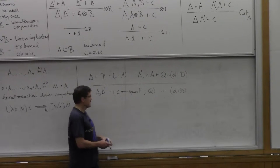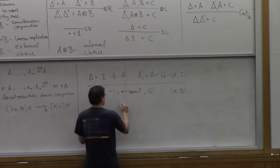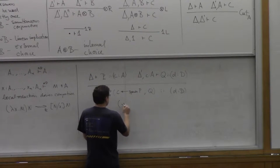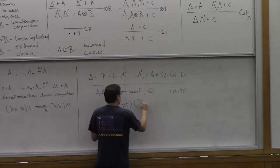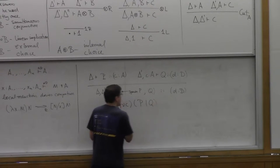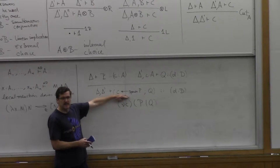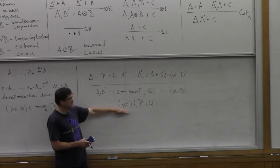So in the pi calculus, if you know about the pi calculus, you write this as there's a new channel C which is private, and you run P and Q in parallel. This is a little more semantic. This is more syntactic in the way you think about the meaning of this connective.